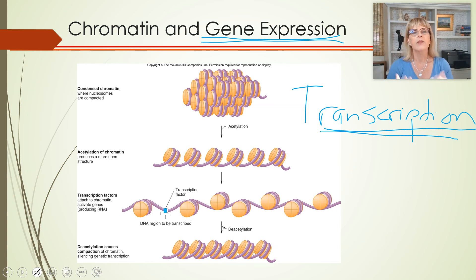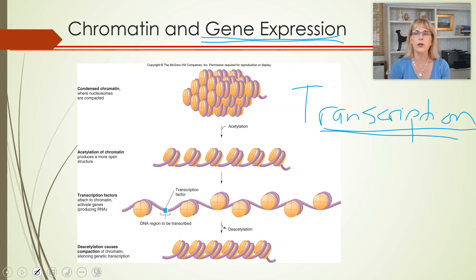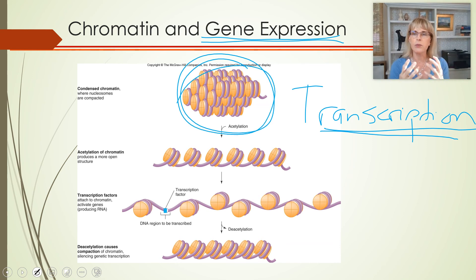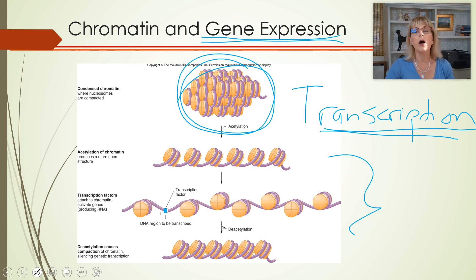Gene expression and transcriptional regulation — which genes get expressed, meaning which genes show up as proteins — depends on what messenger RNA gets transcribed. When you were one cell, all genes were available for transcription. But as cells became specialized — skin cells, muscle cells — genes not necessary for their function get packed away in condensed areas and become unavailable for transcription, so those proteins won't be made.